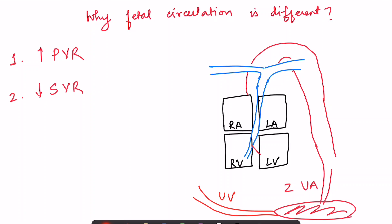What is the need for talking about fetal circulation separately? Fetal circulation is different from postnatal circulation because of two fundamental differences: the lung is not functioning, and the placenta is the lung of the fetus. Because of this there is increased pulmonary vascular resistance, so pulmonary vessels have more resistance, and there is decreased systemic vascular resistance. When resistance is more, blood flow is less, and when resistance is less, blood flow is more.